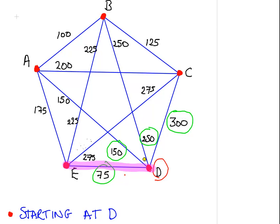Now the next thing we have to do is we have to go from E to either A, B or C. A is 175, B is 225, or C is 275. So we are going to go to A.